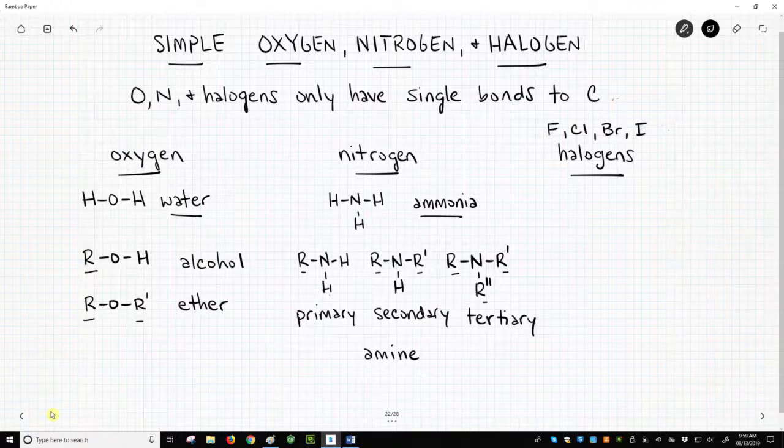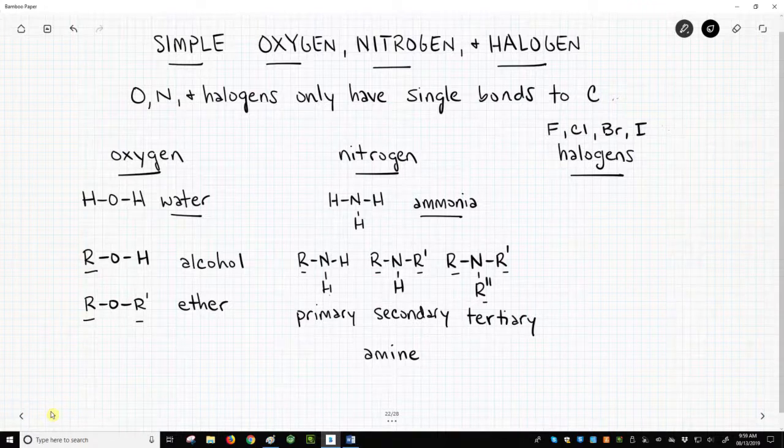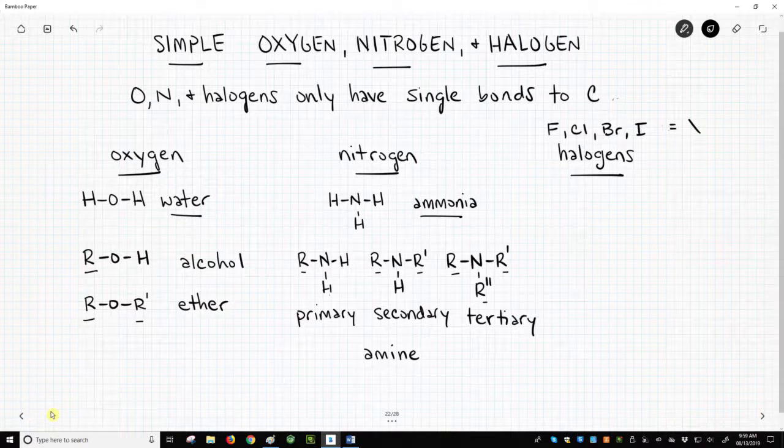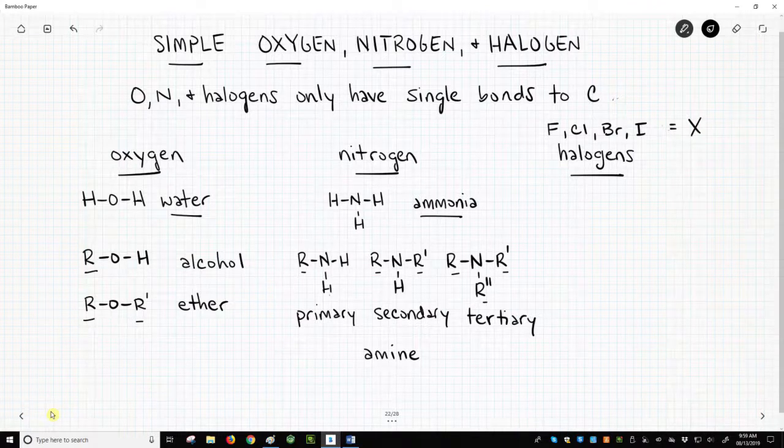Finally, we have our halogens. These include, most commonly, fluorine and chlorine, and less frequently, bromine and iodine. X is a label that includes any halogen. These form one bond to an R group.